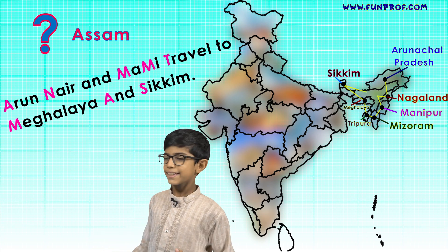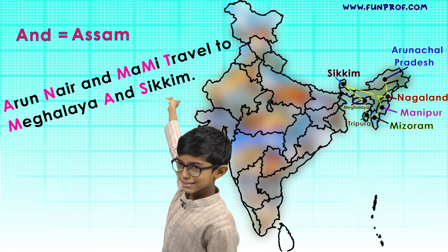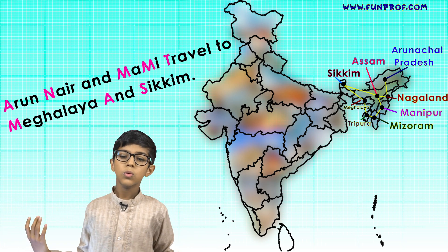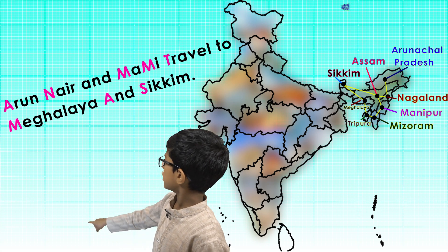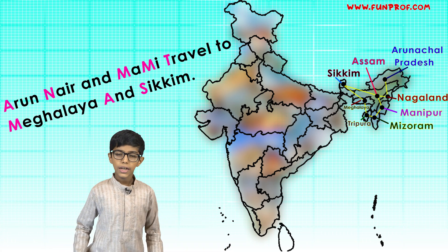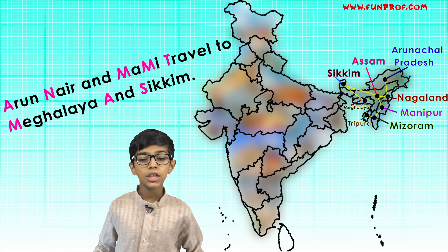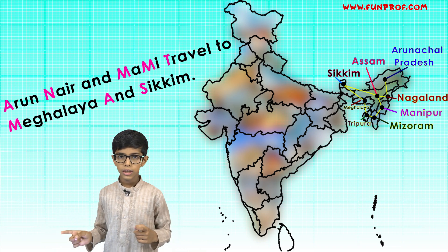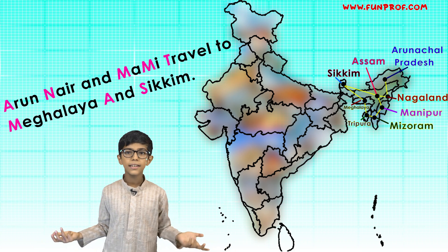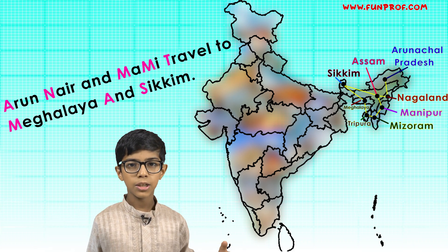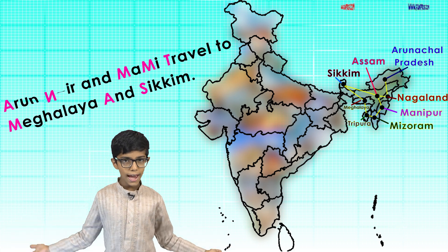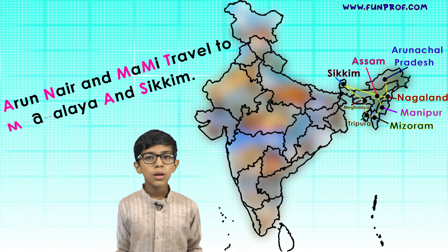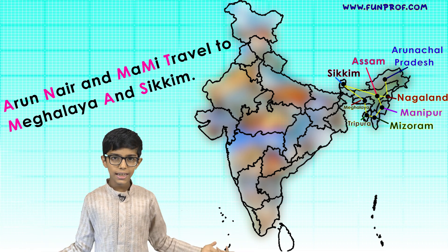But Assam is missing — it comes at the end. Now let's say the mnemonic one more time: Arun, Nair and Mami travel to Meghalaya and Sikkim.